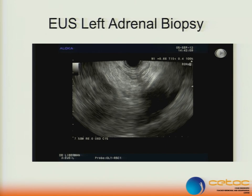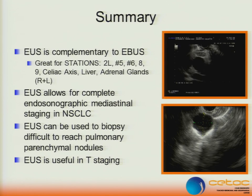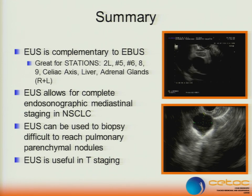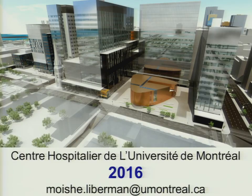In the old days, a lot of us would have operated on these patients and ended up with widely metastatic disease six months later. In summary: EUS is complementary to EBUS — really good for stations 2L, 5, 6, 8, and 9. We like to get the celiac axis in lower lobe tumors. For liver mets and adrenal glands on both sides, it's great. EUS combined with EBUS will allow you to do a complete endosonographic mediastinal staging, and EUS can be used to biopsy difficult-to-reach pulmonary nodules and for T-staging. Thank you very much.